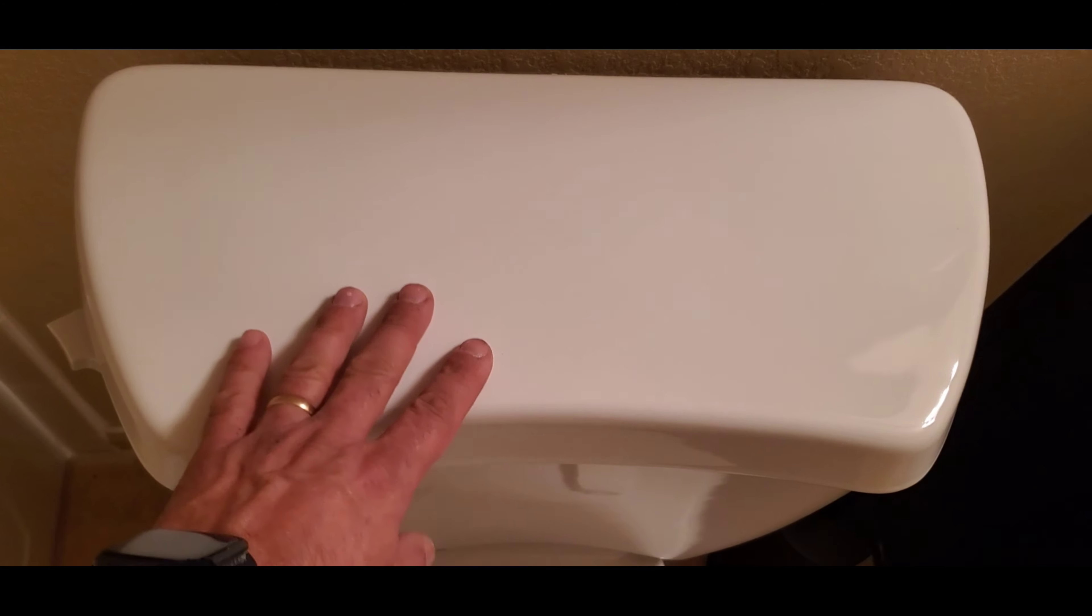The first step is to remove the toilet tank lid. To do that, you just lift it and put it down somewhere safe. On the toilet seat works.